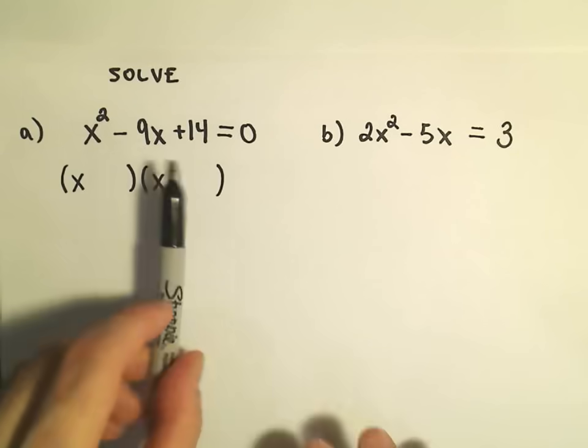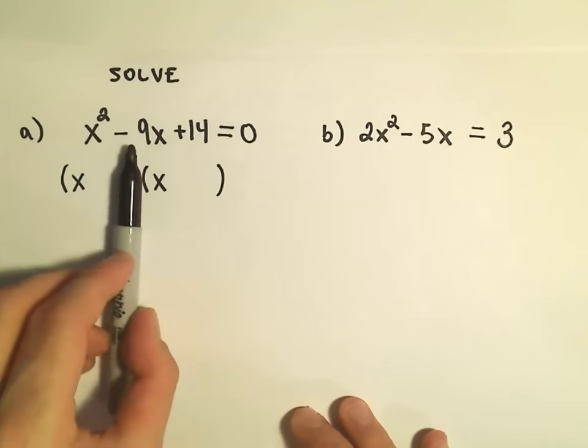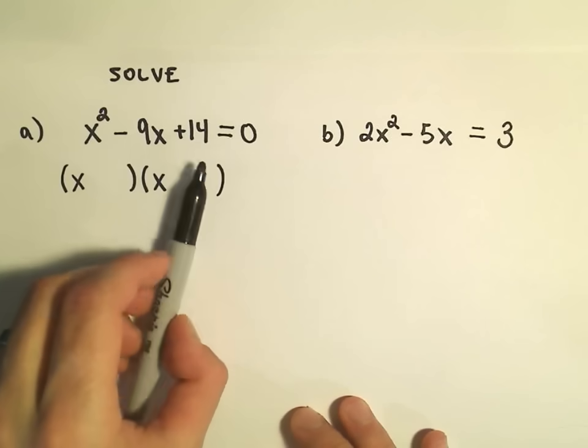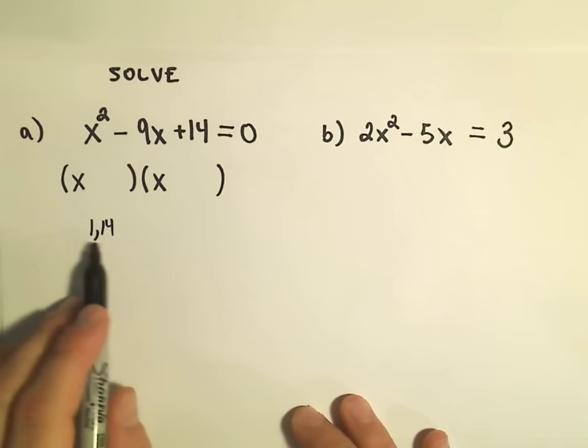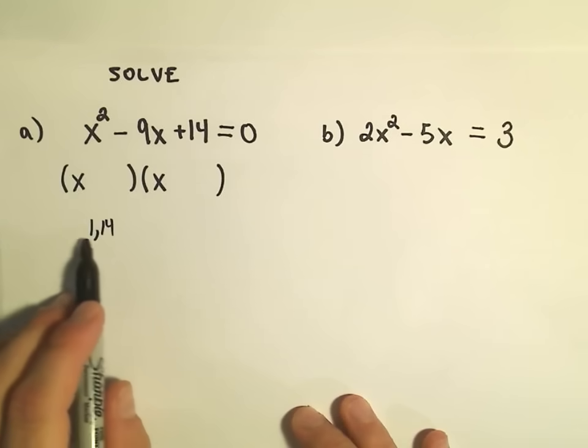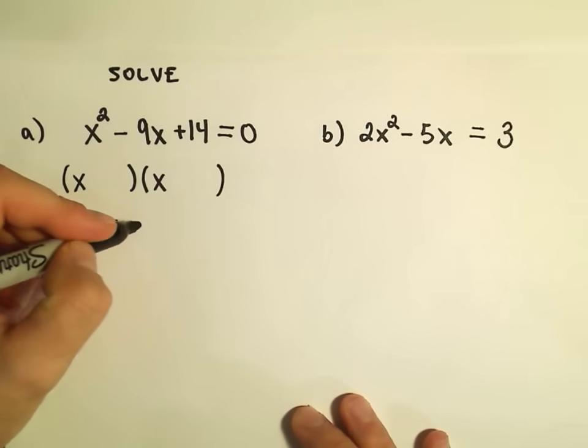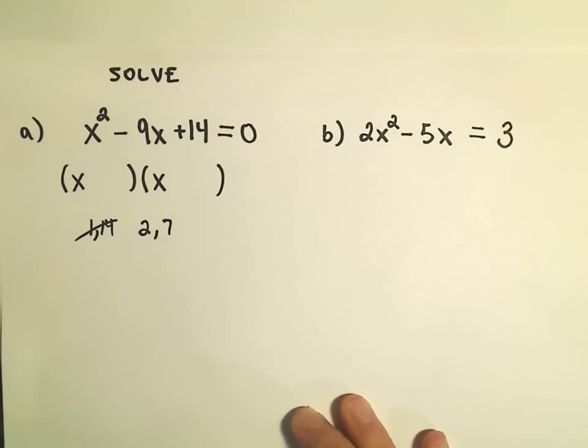I'm looking for two numbers that multiply to positive 14 but add up to negative 9. I'm thinking about factors of 14 in my head. 1 and 14, I don't see how I can add or subtract or do anything with that to get a negative 9, so I don't think that pair is going to work. Well, 2 and 7, I can multiply those together to get positive 14.